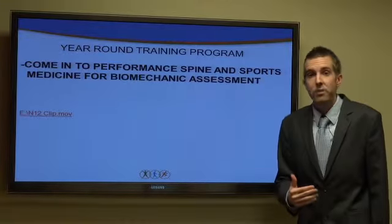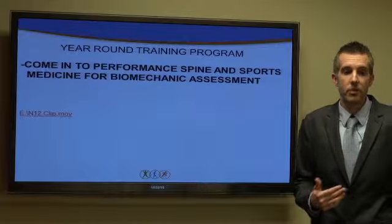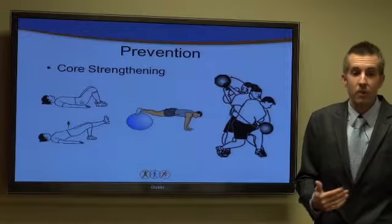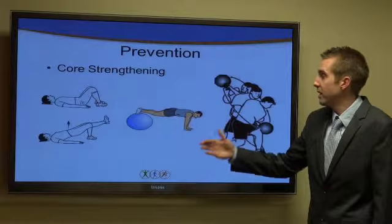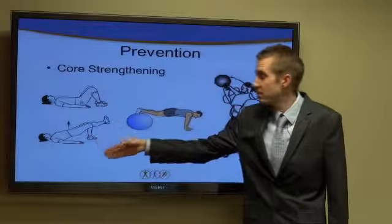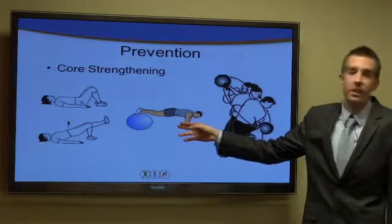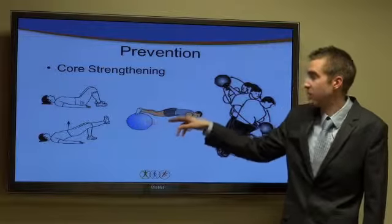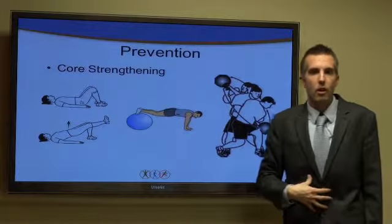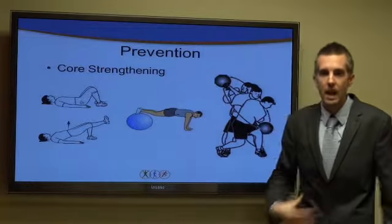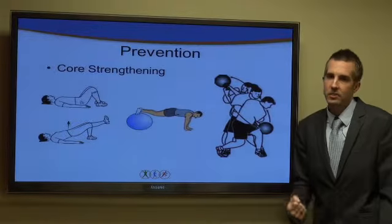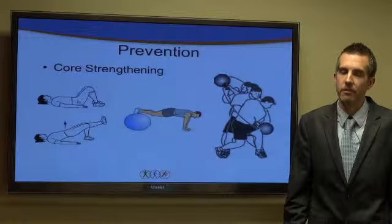For a year-round training program, you can come into Performance Spine and Sports Medicine, where we'll first look at your biomechanics and then set you up on a core strengthening program. Here are some good exercises for basketball athletes: doing planks, a physio ball — a great exercise where you can work hamstrings by curling the ball underneath you and back out, work your upper body with a push-up, while working your abs and glutes the whole time. Then the wood chopper, a great explosive exercise that works the full body.